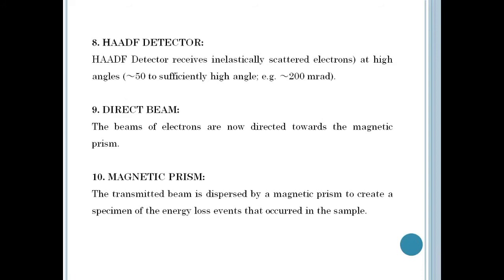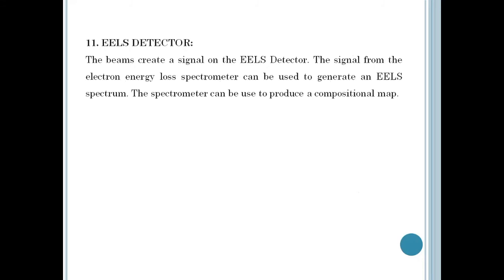The beam creates a signal on the EELS detector. The signal from the EELS spectrometer can be used to generate an electron energy loss spectrum, and the spectrometer can also be used to produce a compositional map.